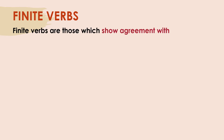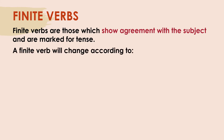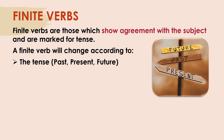What are finite verbs? Finite verbs are those which show agreement with the subject and are marked for tense. A finite verb will change according to the tense — that means the past, present, or future tense. The finite verb will also change according to person: first person, second person, or third person.